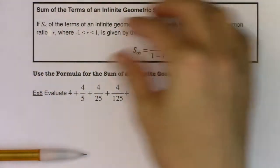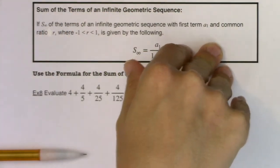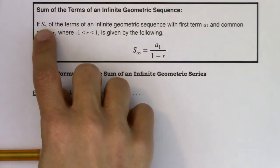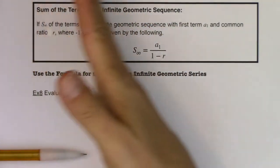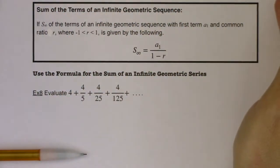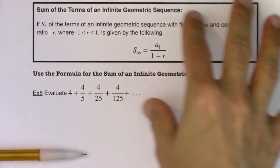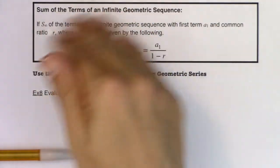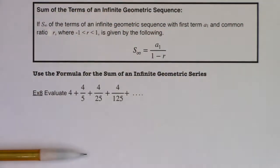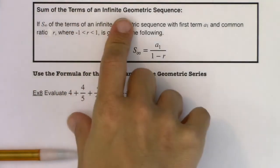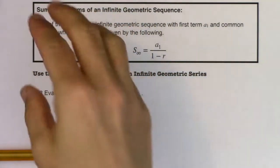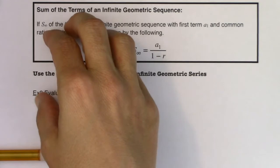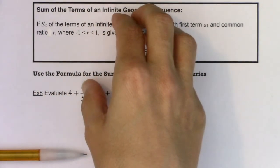We're literally going to add numbers forever — we're not going to stop. You're going to see this new symbol S sub infinity. Imagine you had a geometric sequence and you could continue it on forever. Any sequence, whether arithmetic or geometric, you could continue that pattern forever, and that's what we're going to add this time — the terms of an infinite geometric sequence, whereas before we were summing the first n terms.